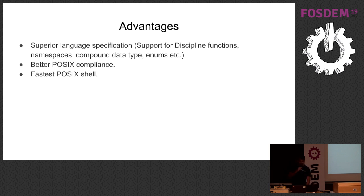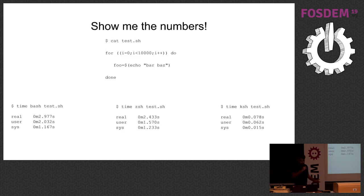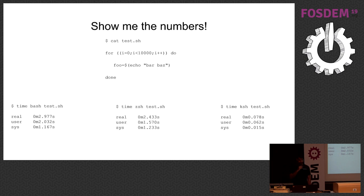Korn Shell has support for discipline functions, namespaces, compound data types, and NMS. It has better POSIX compliance, and it is still the fastest POSIX shell. For example, this is a simple script — it runs a for loop 10,000 times with a subshell inside. Bash takes about 2.9 seconds, dash 2.4 seconds, but Korn Shell takes just 78 milliseconds. It's so fast. But no one uses it.